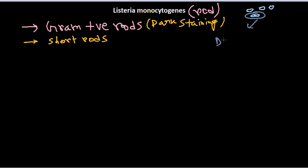You can find them as diplobacillus, or we can also see that they are attached with one another to get a chain-like structure. You can get short chains like that.